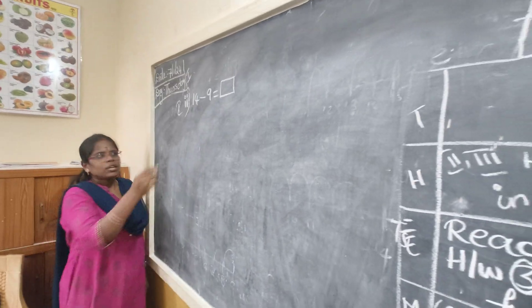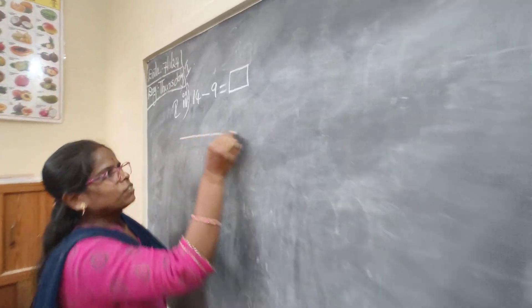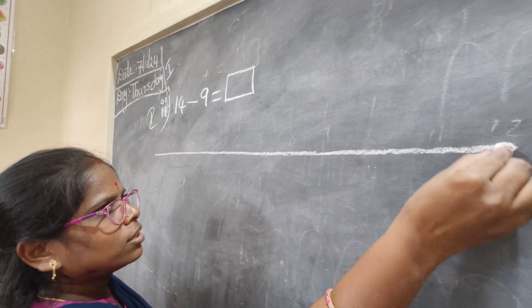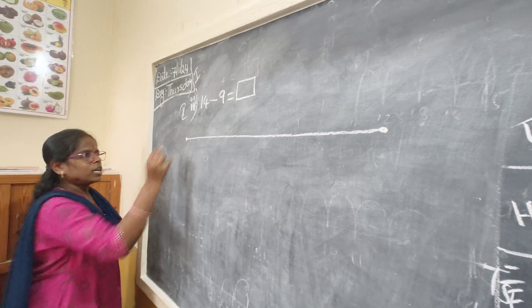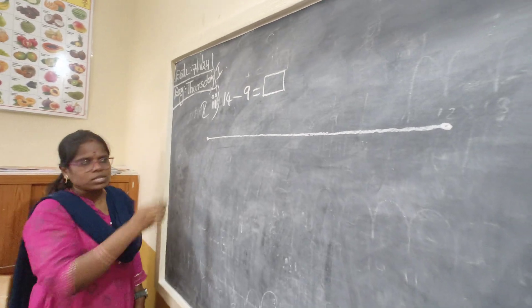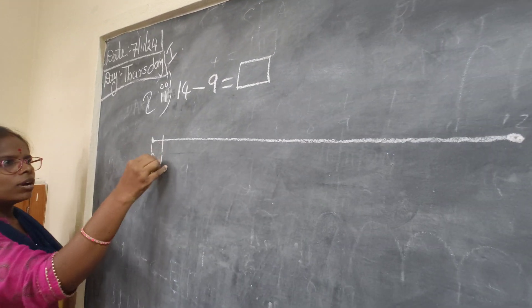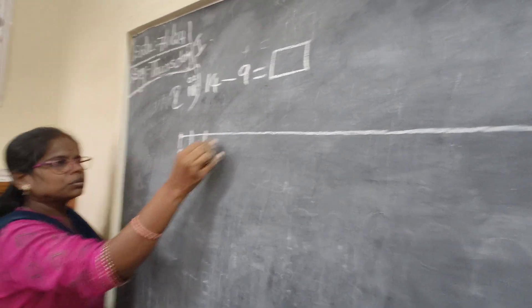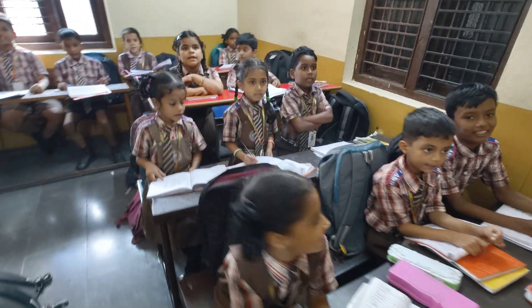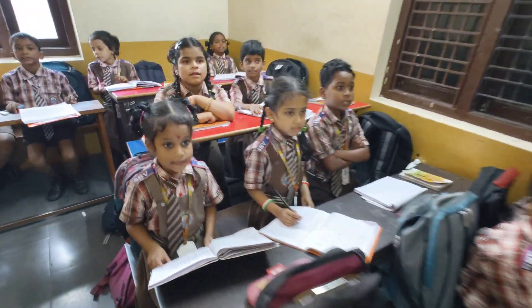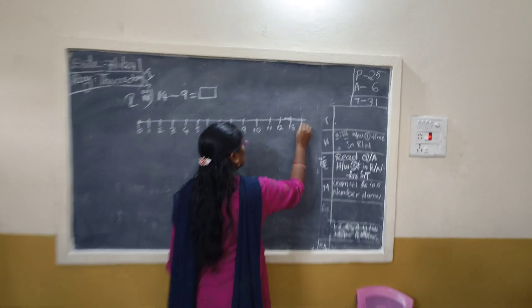Okay, draw a line first of all. Write numbers: 0, 1, 2, 3, 4, 5, 6, 7, 8, 9, 10, 11, 12, 13, 14, 15.